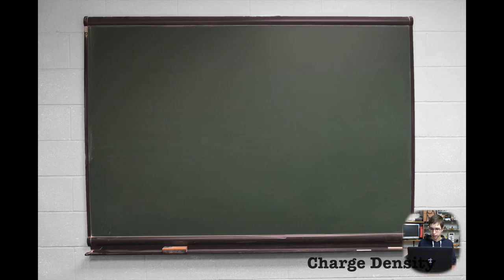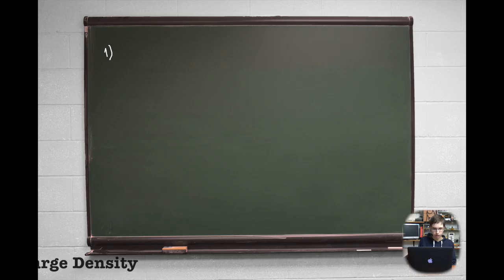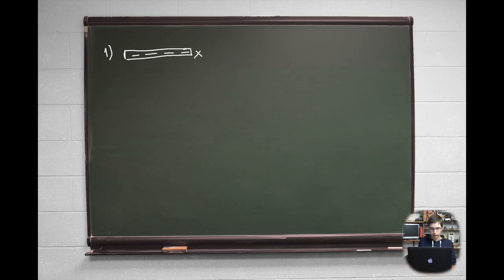Charge density is a measure of electric charge per unit volume of space, which can be measured in one of three dimensions depending on the object where the charge is distributed. The first type is electric charge density per unit of length, appropriate for objects like a stick whose other two dimensions are negligible compared to its length dimension x. It is calculated as λ equals Δq over Δx, where Δq is an amount of electric charge and Δx is the unit of the object's length where the charge is situated. It is measured in coulombs per meter.